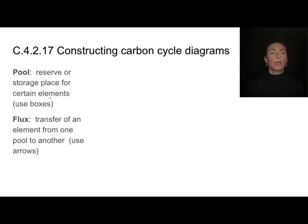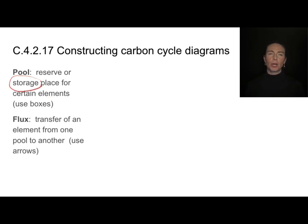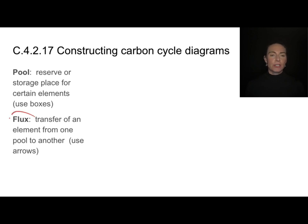We're going to put boxes around things that represent pools of carbon — that's where carbon gets stored. And we're going to use arrows to represent changes or fluxes, the transfer of carbon from one pool to another.